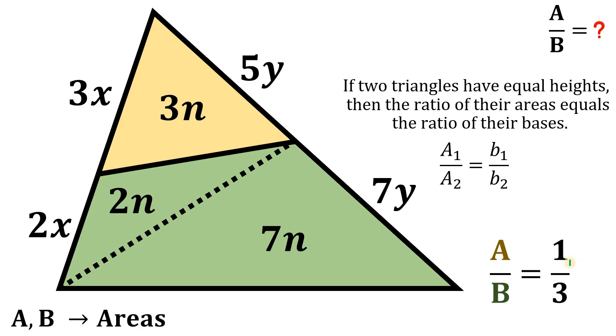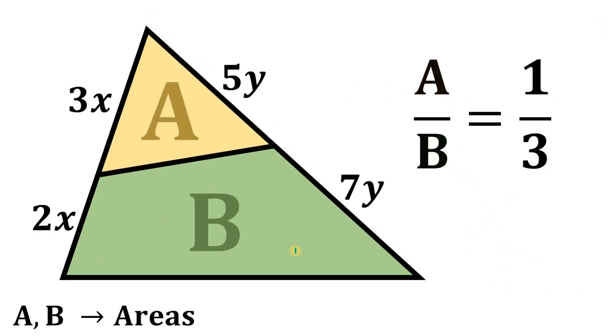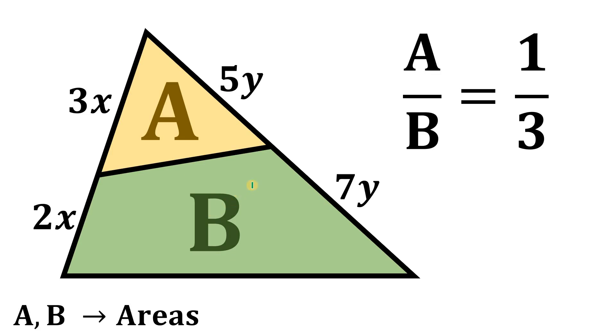And there you have it. So, the ratio of area A over the area B simply equal to 1 over 3. And that is our answer to this question. So, given this figure, then the ratio of A to B simply equal to 1 is to 3.